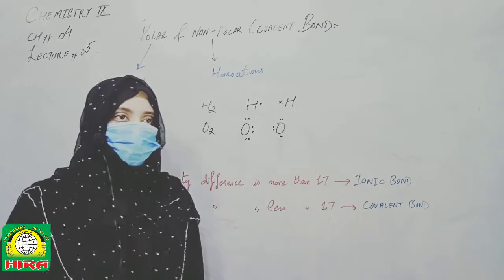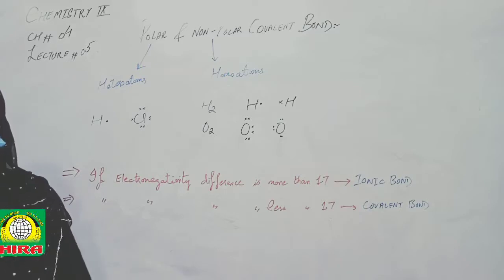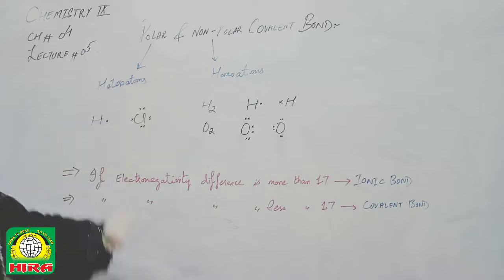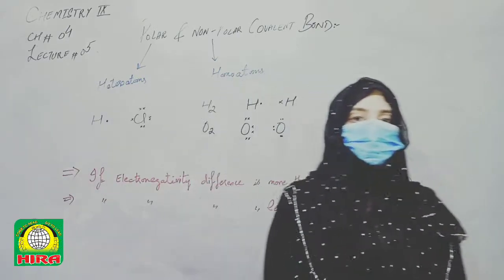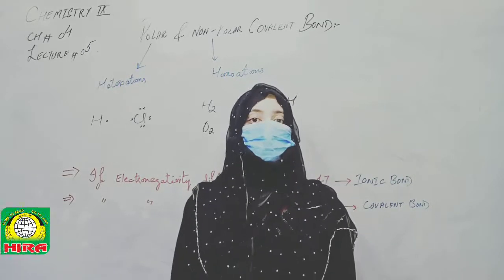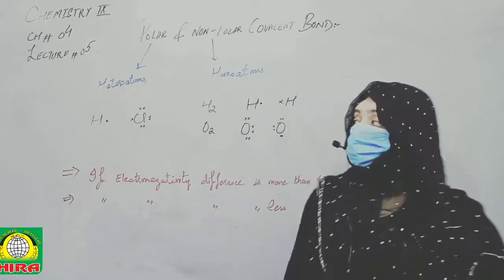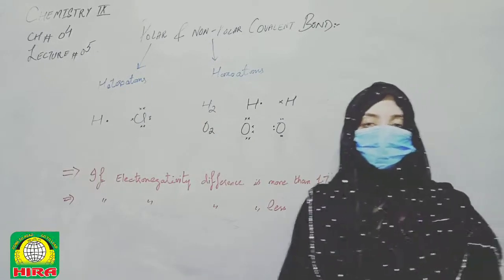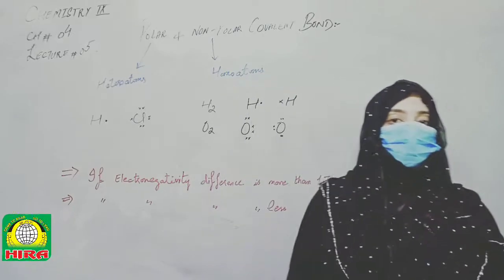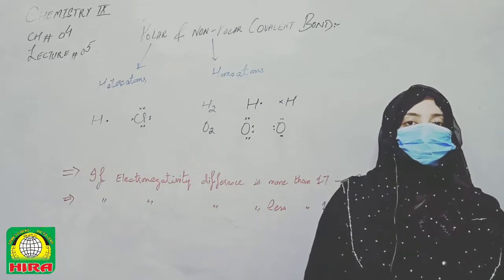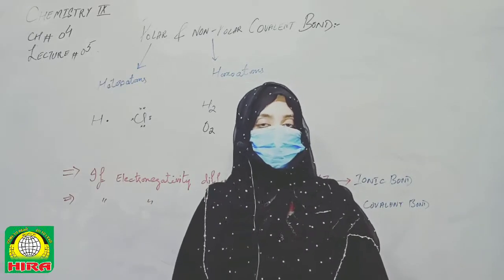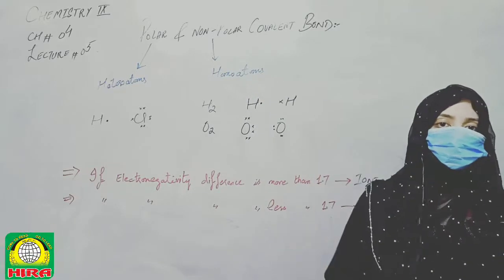We will also cover long questions on the types of covalent bonds. First, let's review: we have talked about single covalent bonds, double covalent bonds, and triple covalent bonds. Regarding Polar and Non-Polar Covalent Bonds, we defined covalent bonds as the mutual sharing of electron pairs. Examples we discussed include HCl, H2, Cl2, and Br2.